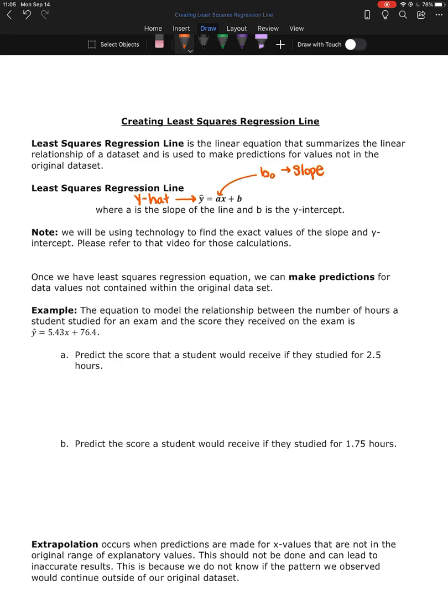So if you recall, slope tells you how fast the line is increasing in a positive relationship or decreasing in a negative relationship. And your slope is always going to be next to the x. The x represents our explanatory variable that changes.